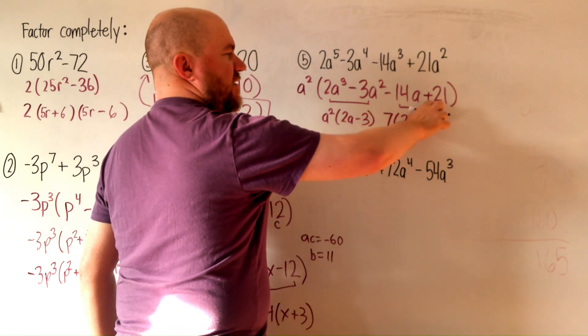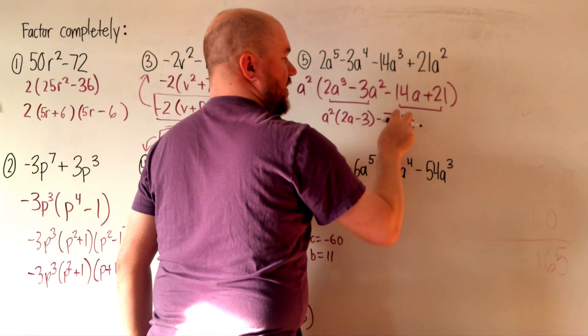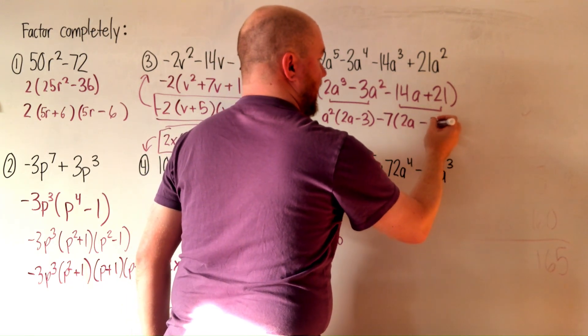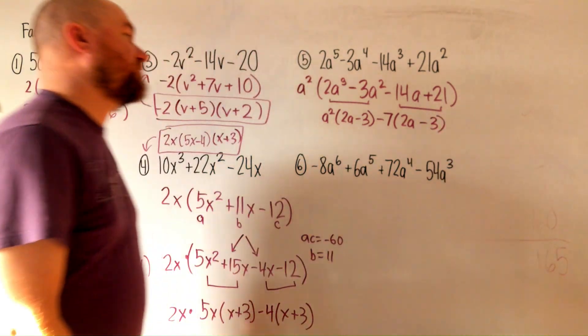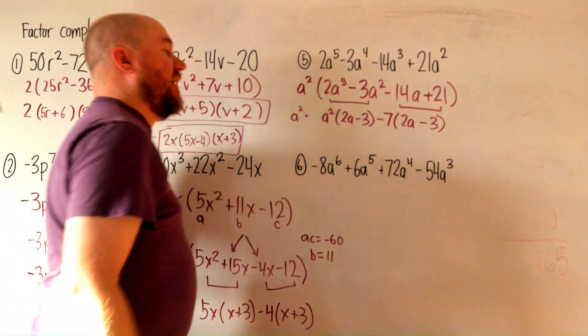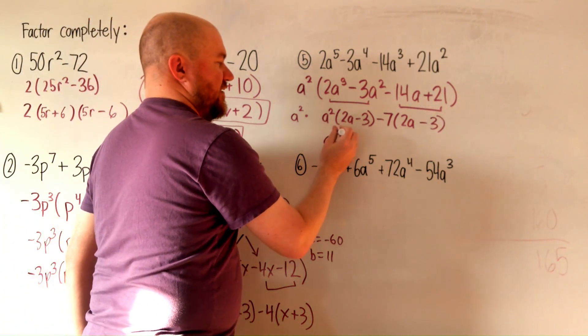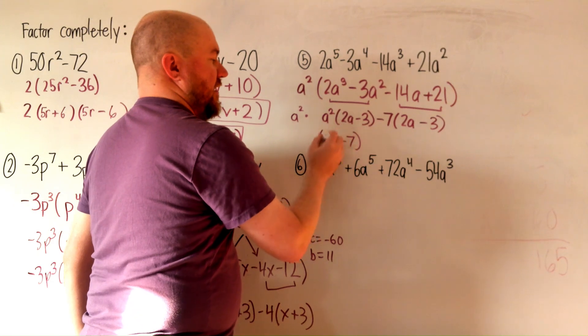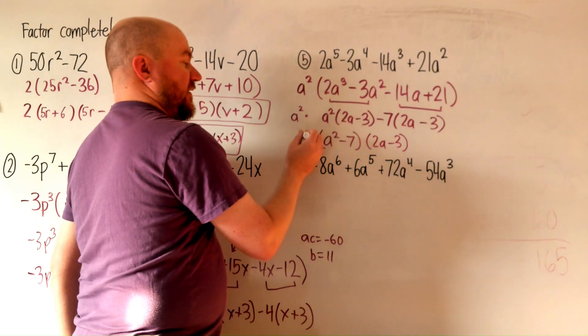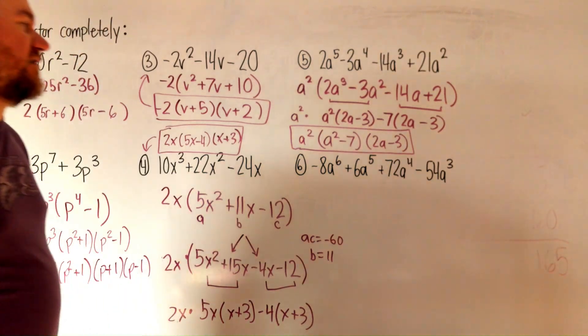Now if I factor out just a 7, that will be a positive 3. So I'm going to factor out a negative 7, so that that becomes a negative. And that becomes a negative as well. And then that a squared is just still kind of hanging out here. And then now our final step is the stuff in front of the parentheses is a factor. And the stuff inside of the parentheses is a factor. And then don't forget that a squared that's out here. So that is our answer to question 5.